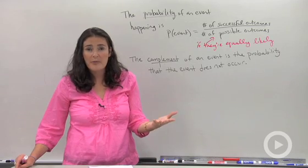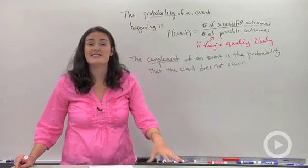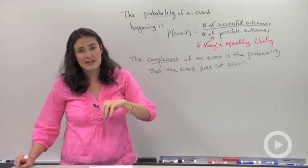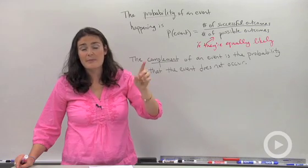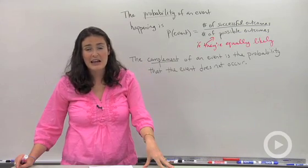Then we would say the complement is the probability that it does not rain. 80% chance of rain means 20% chance that it does not rain. That's a complement.